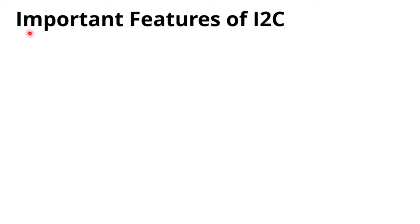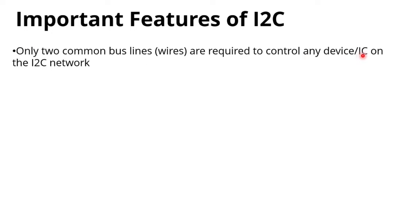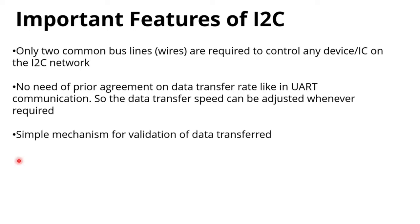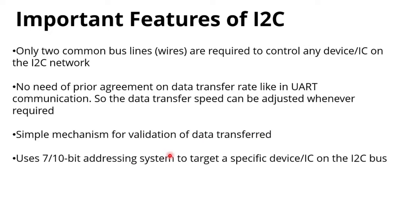Here we discuss important features of I2C. Only two common bus lines — serial clock and serial data — are required to control any device on the I2C network. No prior agreement on data transfer rate is needed like UART, where you must set the baud rate initially. In I2C, you can change the speed during runtime whenever required. There is also a simple mechanism for validation of data transfer.